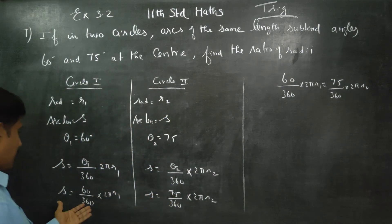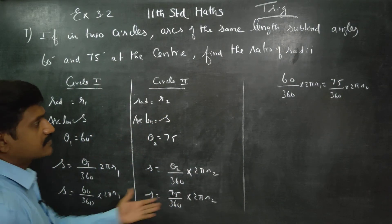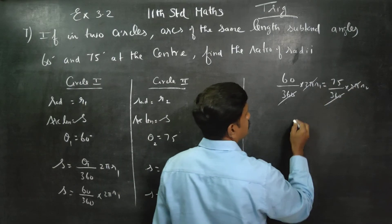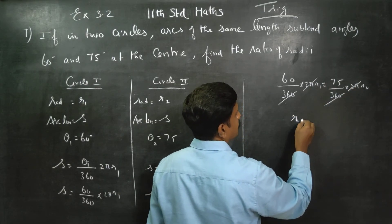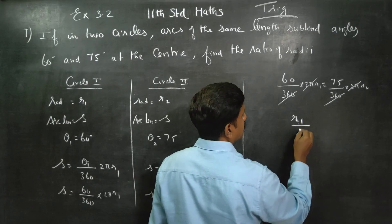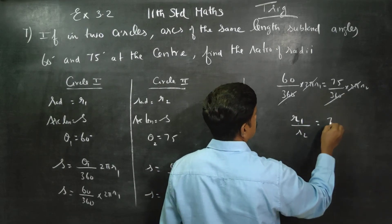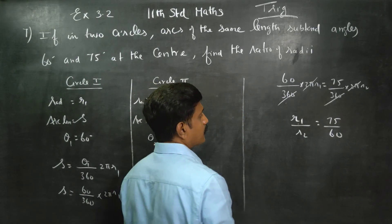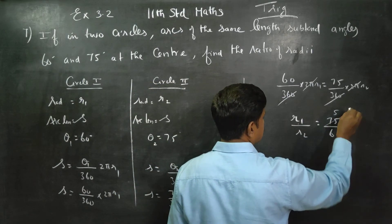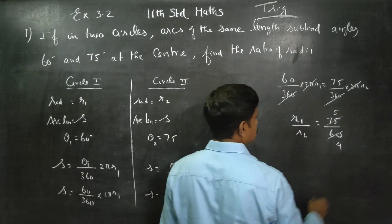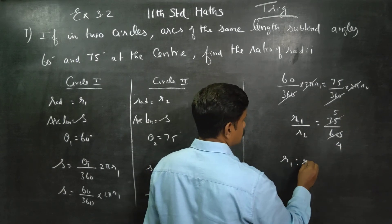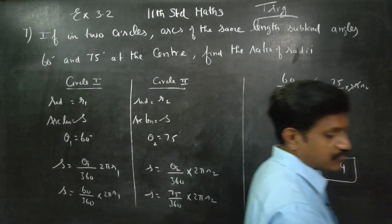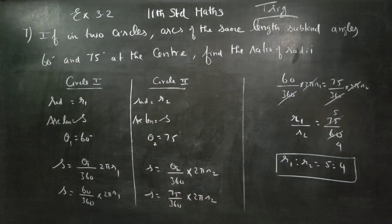Since the arc lengths are equal, LHS equals RHS. 360 cancels, 2 pi cancels. r1 by r2 equals 75 by 60. Using the 15 times table: 15 times 5 is 75, 15 times 4 is 60. Therefore, r1 to r2 equals 5 to 4. This is the ratio of the radii. Thank you.